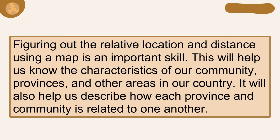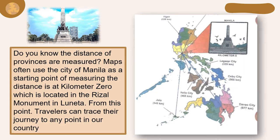It will also help us describe how each province and community is related to one another. Do you know how the distances of provinces are measured? Maps often use the city of Manila as the starting point, at kilometer zero, which is located at the Rizal Monument in Luneta. From this point, travelers can trace their journey to any point in our country.